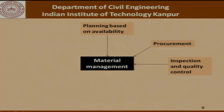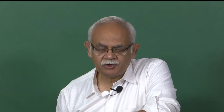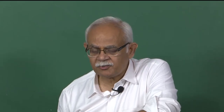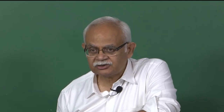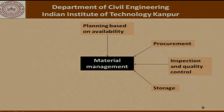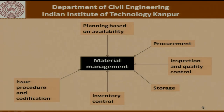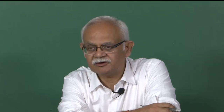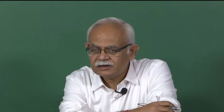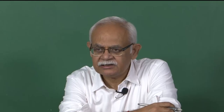This quality control and inspection is done at the site where the material is being delivered, or sometimes at the site where the material or equipment is being manufactured. There will be procedures allowing an inspection to be carried out at the shop of the fabricator or manufacturer to ensure the equipment being delivered meets quality requirements. There are also storage issues, inventory control, an issue procedure and codification. What we are talking about is material being procured by the client and supplied to the contractor, or material being procured by the contractor for the different activities involved in construction.